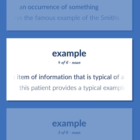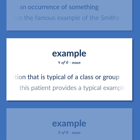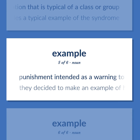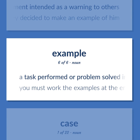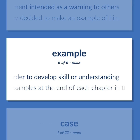EXAMPLE: An item of information that is typical of a class or group — this patient provides a typical example of the syndrome. Punishment intended as a warning to others — they decided to make an example of him. A task performed or problem solved in order to develop skill or understanding — you must work the examples at the end of each chapter in the textbook.